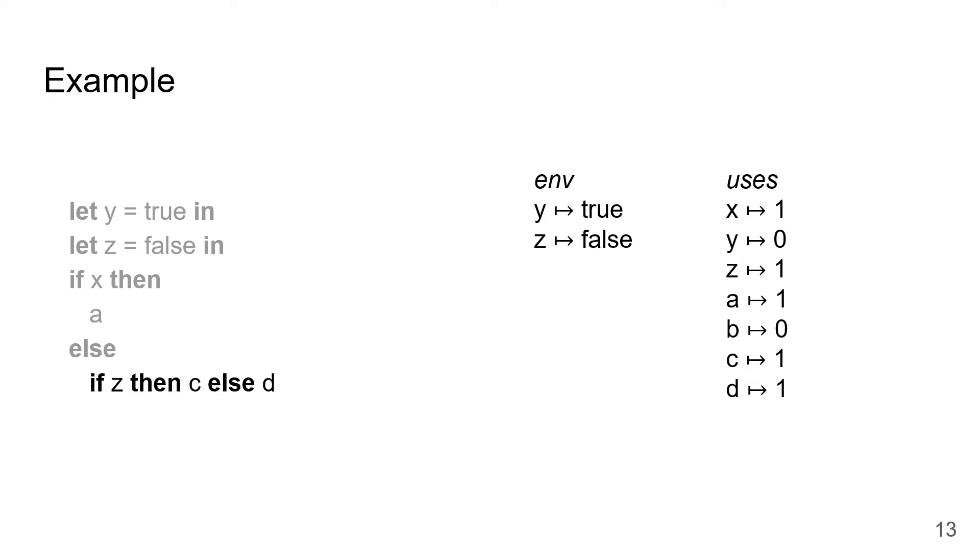Something similar occurs in the recursive call on the else branch. We encounter an if-then-else scrutinizing z, and when we look up z in the environment, we find that it's bound to false. So, we can perform case folding, replacing this if-then-else by its else branch d. In doing so, we'll be deleting occurrences of variables z and c, and so we have to decrement their use counts. Now, after decrementing various use counts, certain variables are dead, and we will discover this as we return from recursive calls on the way back up.